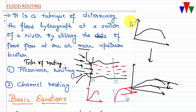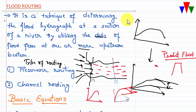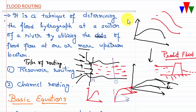Flood routing is used for many purposes: we can establish the flood peak at a downstream location to predict floods; we can establish the effect of constructing a reservoir on a flood — how much the peak will be attenuated by a dam; we can determine the required height of flood protection works; and we can predict the behavior of a river after changes have been made in channel conditions.